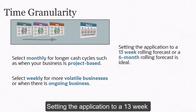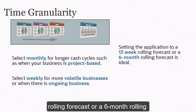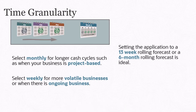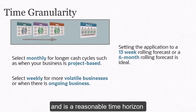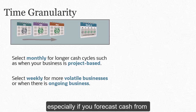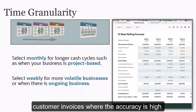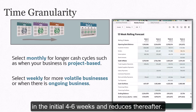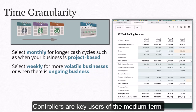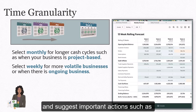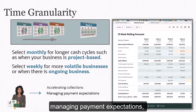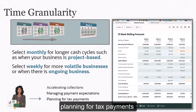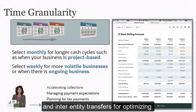Setting the application to a 13-week rolling forecast or a 6-month rolling forecast is ideal. 13 weeks represent a quarter and is a reasonable time horizon, especially if you forecast cash from customer invoices where the accuracy is high in the initial 4 to 6 weeks and reduces thereafter. Controllers are key users of the medium-term forecast as they review the forecast and suggest important actions such as accelerating collections, managing payment expectations, planning for tax payments, and inter-entity transfers for optimizing cash across entities within a region.